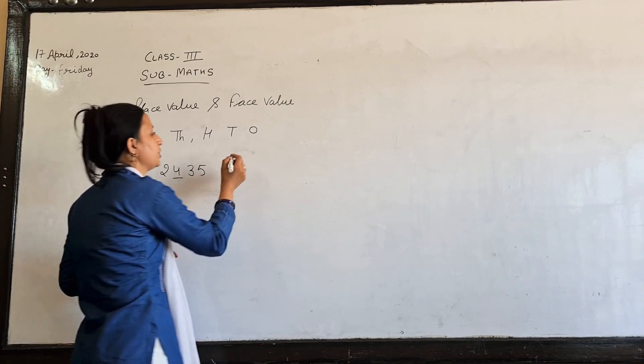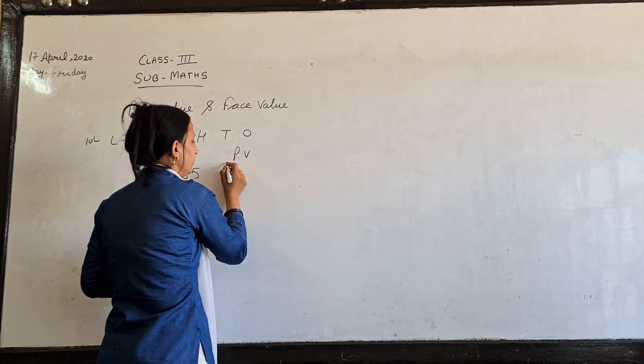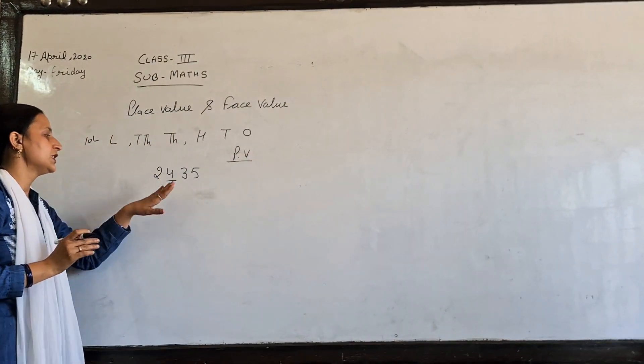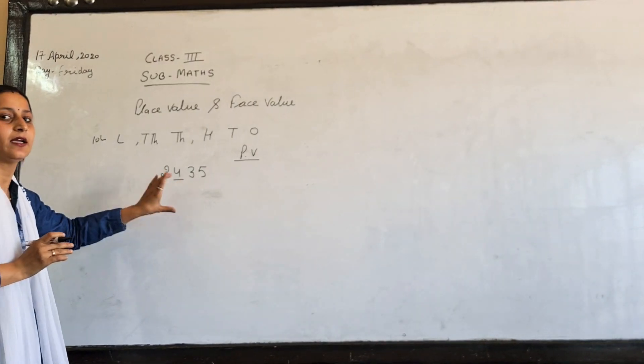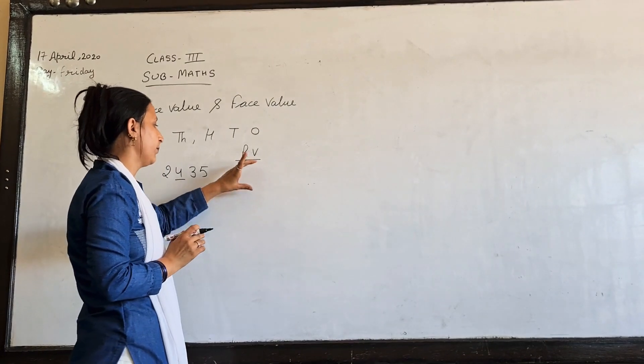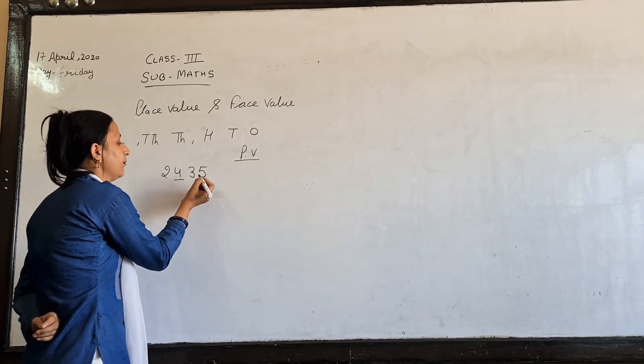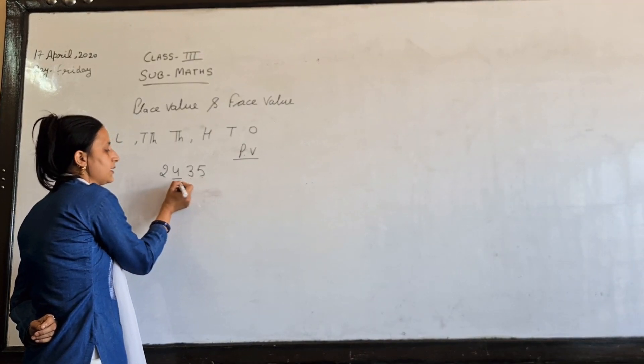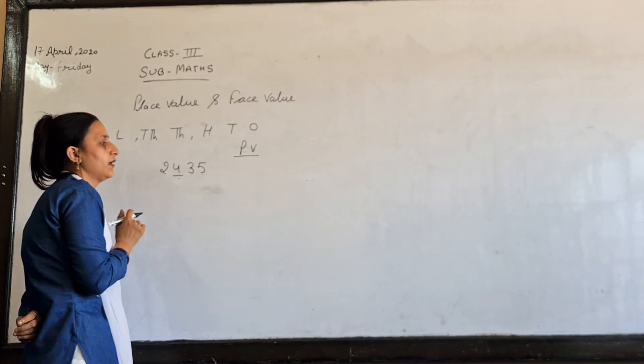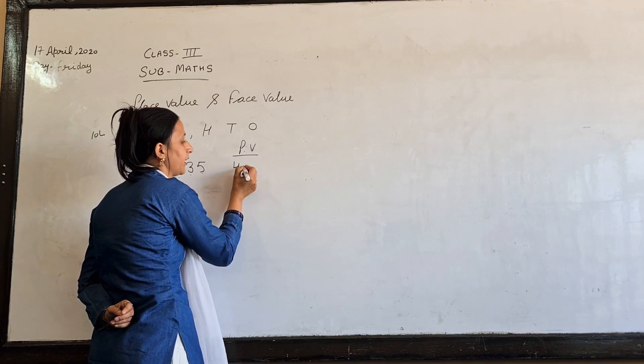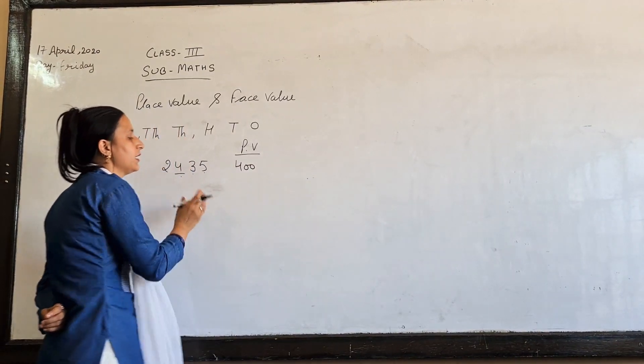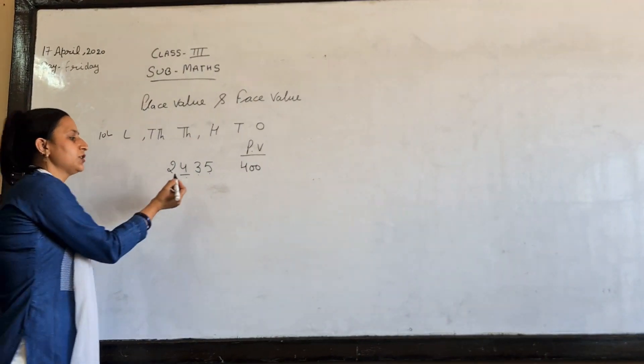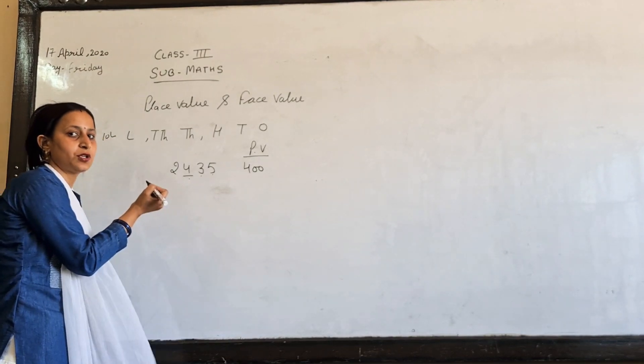This is your place value. Your place value is 400. Give us your place value. This is your place value. For this simple value, your place value is 400.